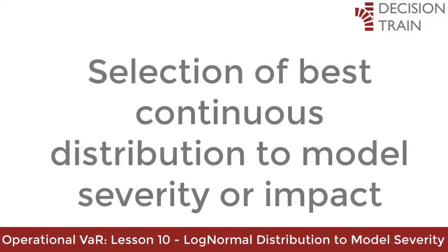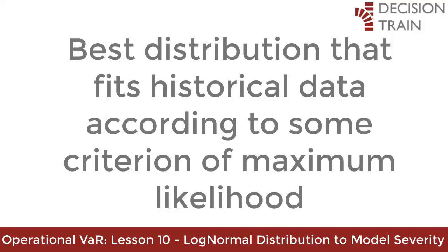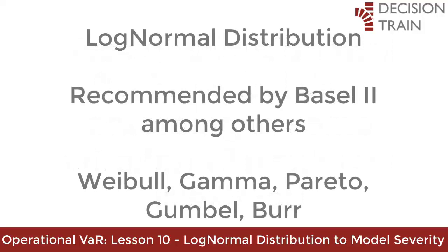We could comment for hours about the selection of the best continuous distribution to model the severity or impact of operational risks. The general practice is to find the distribution that best fits the historical data and apply a criterion of maximum likelihood to select the best distribution. In 2001 the Basel Committee suggested the use of the log-normal distribution, although other parametric distributions such as the Weibull, Gamma, Pareto, Gumbel, and others are also valid. There are statistical tests to validate hypothesis tests regarding these distributions, a field we will expand in more advanced courses.